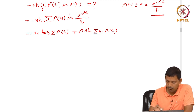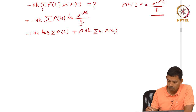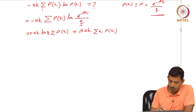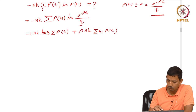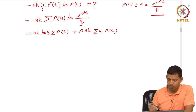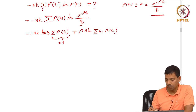So, minus Nk sum over ρ times e^(-βεᵢ)/q — writing the ln(1/q) term first — that comes out with a negative sign and that negative with this negative becomes positive Nk ln q, and we had this term ρ(εᵢ) plus this term where ln(e^(-βεᵢ)) is nothing but βεᵢ. That β comes out of the sum: β·Nk, and inside the sum we have εᵢ times ρ(εᵢ). Now, sum over ρ(εᵢ) is nothing but 1 because total probability is 1. So therefore we get Nk ln q.